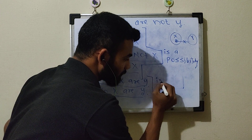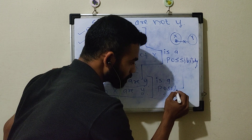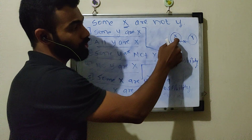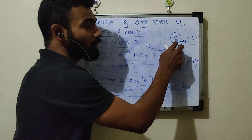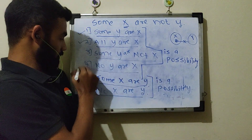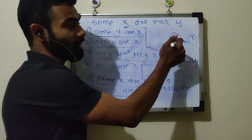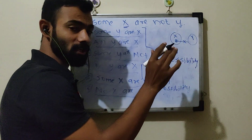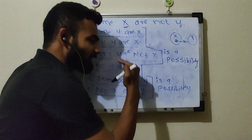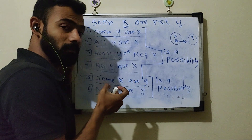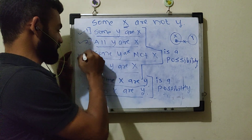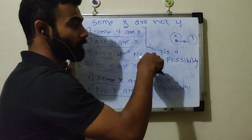But same way, अगर possibility apply करते is a possibility — तो ये दोनों conclusion सही हो जाएंगे। 'Some X are Y' — कुछ जो X है वो Y हो सकते — of course हो सकते। 'No X are Y' — ये भी correct है but only when it is in the possibility. ये 6 conclusions आपको समझ में आया होगा — ये सारे correct conclusions हैं।